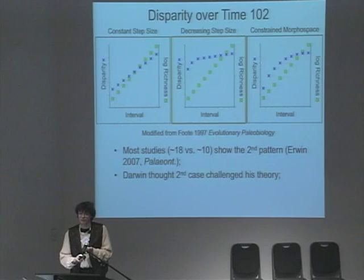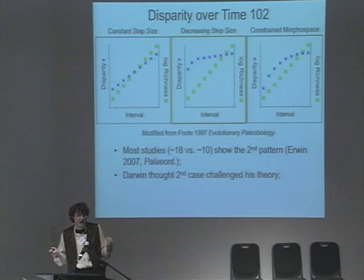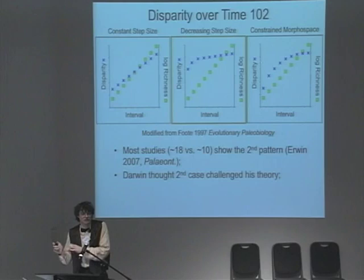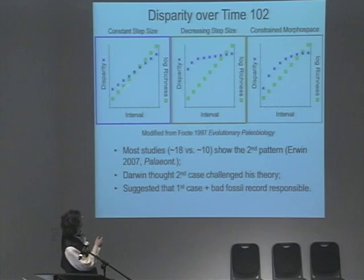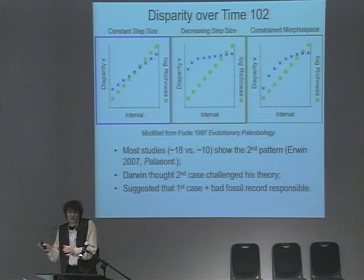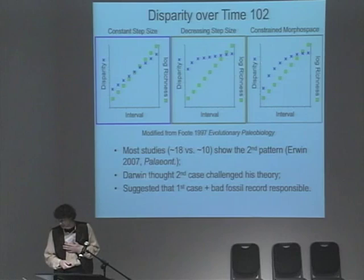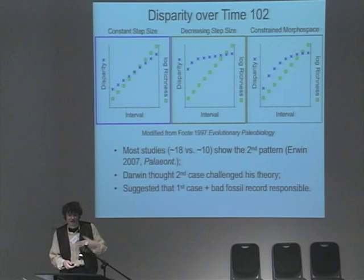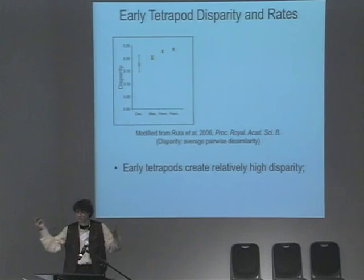Darwin noticed this existed. He refers in the Origin to the sudden appearance of major groups in reference to the Cambrian explosion, and also groups like the teleost fish. He suggested this actually challenged his theory because without computer modeling, he realized it might be tough to get this with constant rates of evolution through time. What he suggested was that we actually had going on something like gradual change but with a lousy fossil record — he even posited the pre-Phanerozoic record was missing was equivalent almost to the length of the Phanerozoic itself. So I'd like to walk through a case study looking at disparity compared to rates and whether Darwin's explanation might work.